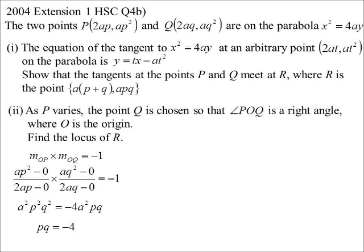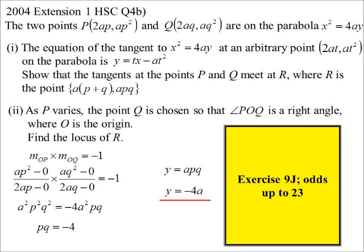Well, if pq is always negative 4, I now have one of those very simple questions. I don't need to find a relationship between y and x because have a look at the y value. The y value is apq. But if pq is always negative 4 for this question, I've got rid of my parameters straight away. So I'm not going to worry about the x value. y is apq. So therefore, y is minus 4a. There are no p's and q's. There's my locus. y is minus 4a. In this case, it could be the whole line because we look at what r represents. Point of intersection of two tangents. But y equals minus 4a would always be outside the parabola. So that's fine. It could be the whole line. So 9j, the odds up to 23.